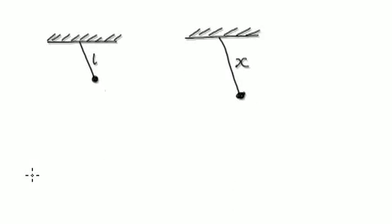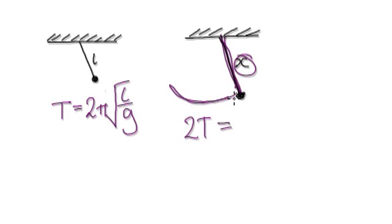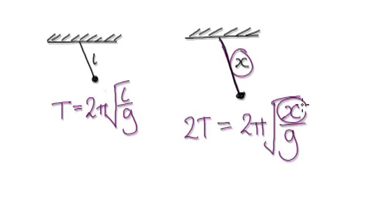To do this, set up two systems. In the first system, the time it takes to do one swing is given by T = 2π√(L/G). In the second system, you want to find a length x such that it gives you 2T — twice as long. So we use 2π√(x/G), and x is what we're trying to isolate.